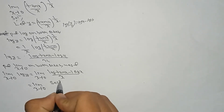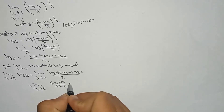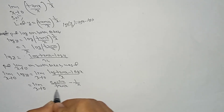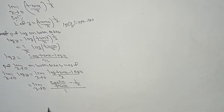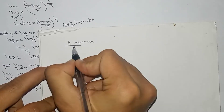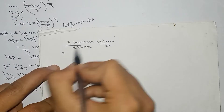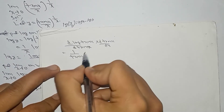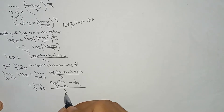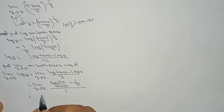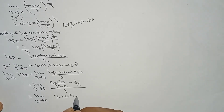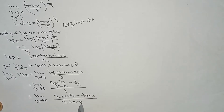The derivative of log(tan x) is sec²x / tan x, and the derivative of log x is 1/x. The derivative of tan x means d(tan x)/dx, which gives sec²x. After applying L'Hôpital's rule and multiplying, it becomes: limit x tends to 0 of (x·sec²x minus tan x) / (x·tan x).